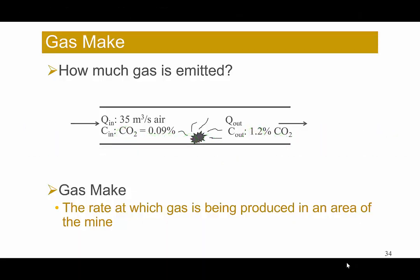In this video, we will talk about the gas make problems. For example, in this figure, it shows the intake air has 35 cubic meters per second of air coming in, and in this air it has 0.09% of CO2. At the return, the CO2 concentration becomes 1.2%. From 0.09% to 1.2%, there is some extra CO2 emitting in this section of the airway. So, how much CO2 is emitted?